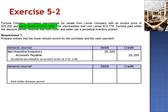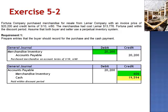Fortuna then pays within the discount period. The debit to accounts payable, $20,200, eliminates the payable balance. Credit merchandise inventory for 3% of the $20,200, which is $606, and credit cash for $19,594. The balance in merchandise inventory — $20,200 minus $606 — equals the amount of cash paid, $19,594.